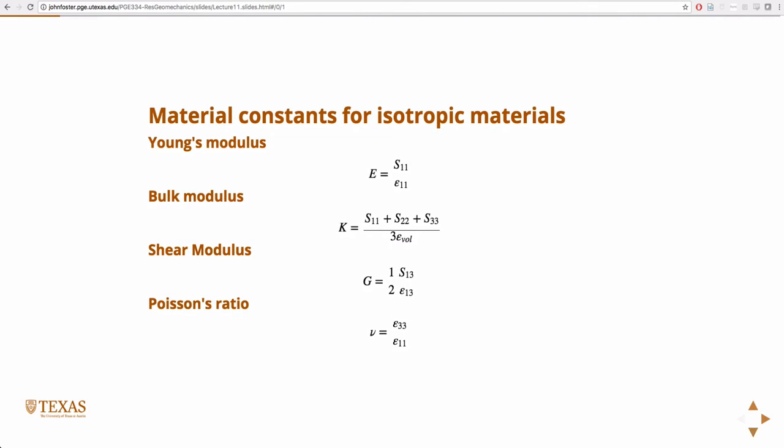We mentioned the dilatation because with that we can define some other material properties. The constitutive model is something that relates stress to strain. Strain relates to displacement. So this gets us from displacement to stress, and there are material properties in between. Some of them, the ones that are easy to find physically, are listed here.